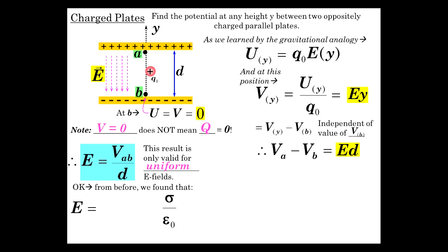So the E-field is constant, we don't have to worry about a complex integral. Now we also knew that the E-field is, from a charged conductor, sigma over epsilon zero.